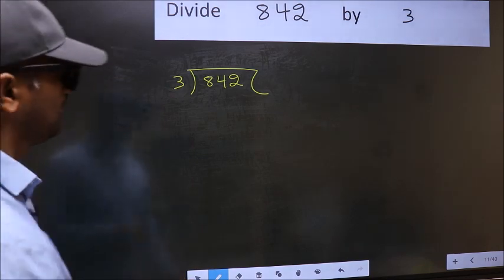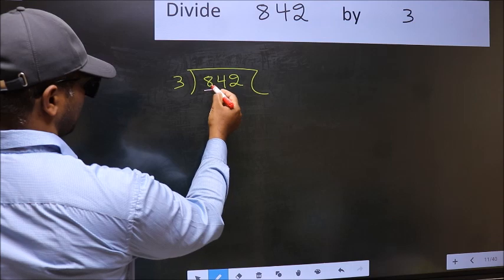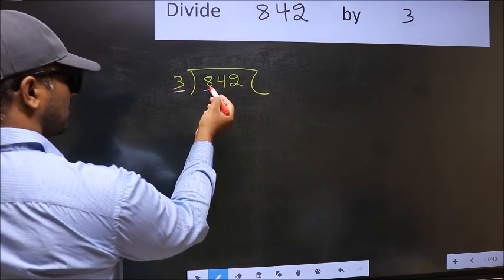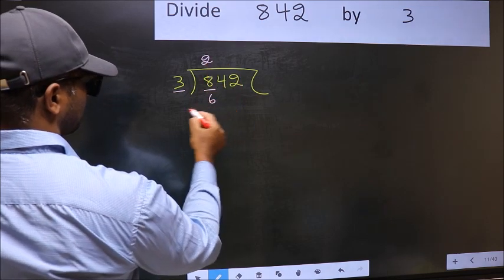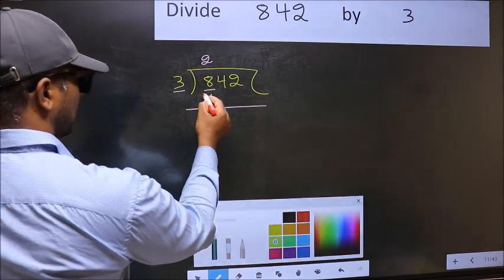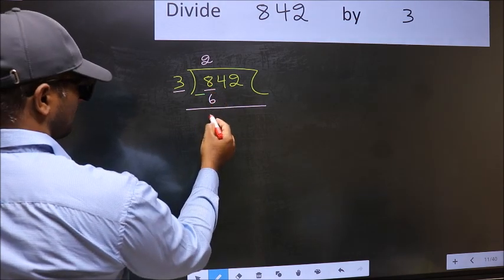Next, here we have 8 and here 3. A number close to 8 in 3 table is 3 times 2, which is 6. Now you should subtract. 8 minus 6 is 2.